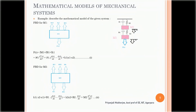Next is the mathematical model of a mechanical system. We describe the mathematical model of a given system with two masses M1 and M2 connected. M2 is the fixed end, and D1, D2, K1, and K2 are connected between M1 and M2. The total force is applied downward, causing mass M1 to have displacement X1 and mass M2 to have displacement X2. We need to write the differential equations for this model, starting with the free body diagram of mass 1.